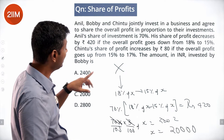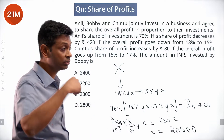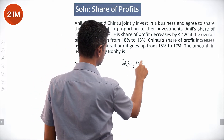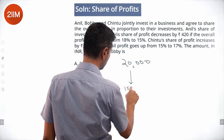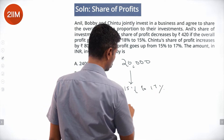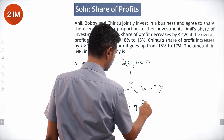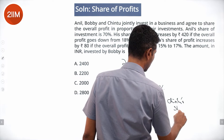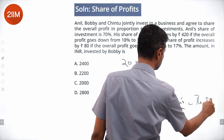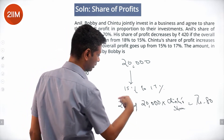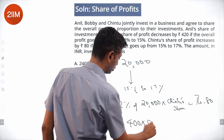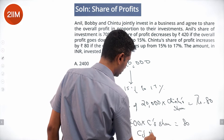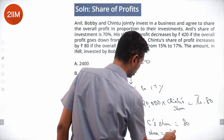Next step: Chintu's share of profit increases by ₹80. The overall profit goes up from 15% to 17%. On the investment of 20,000, 15% to 17% is a 2% increase. 2% of 20,000 equals 400. Chintu's share equals 80 divided by 400, which is 1/5, or 20%.